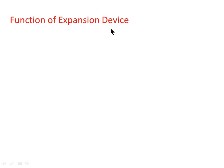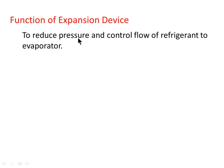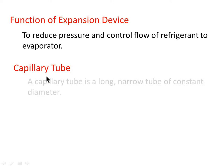The function of an expansion device is to reduce pressure and control the flow of refrigerant to the evaporator. The basic type of expansion device generally used in most refrigeration or air conditioning systems is the capillary tube.